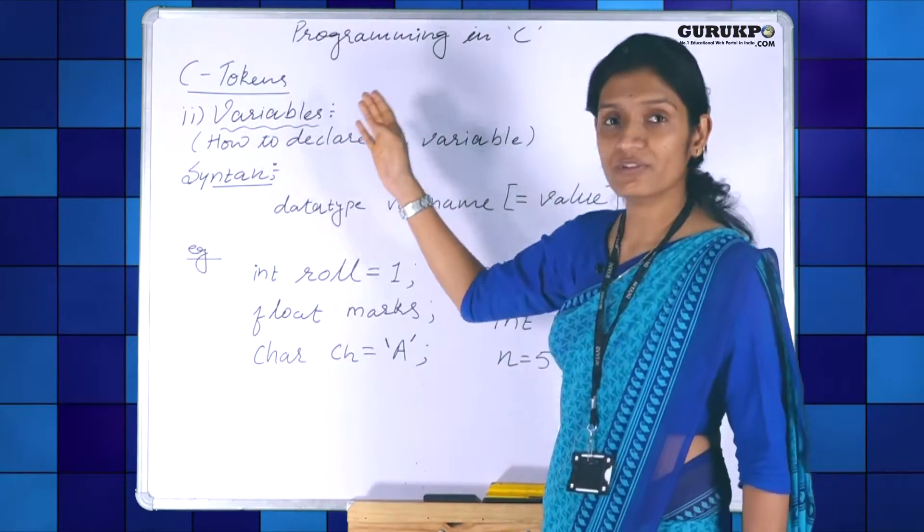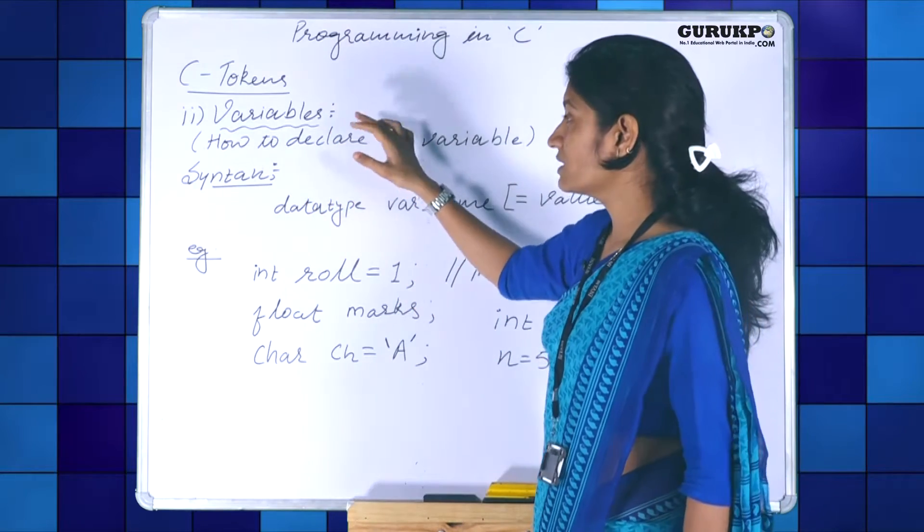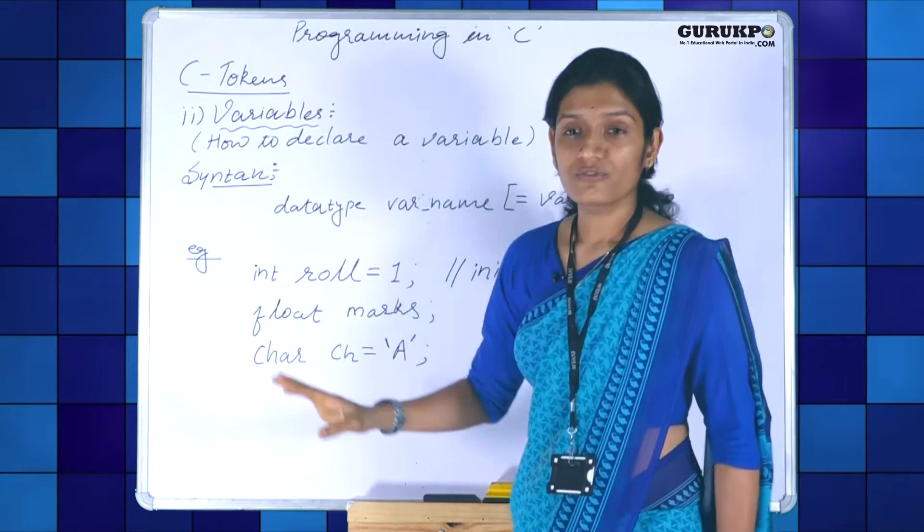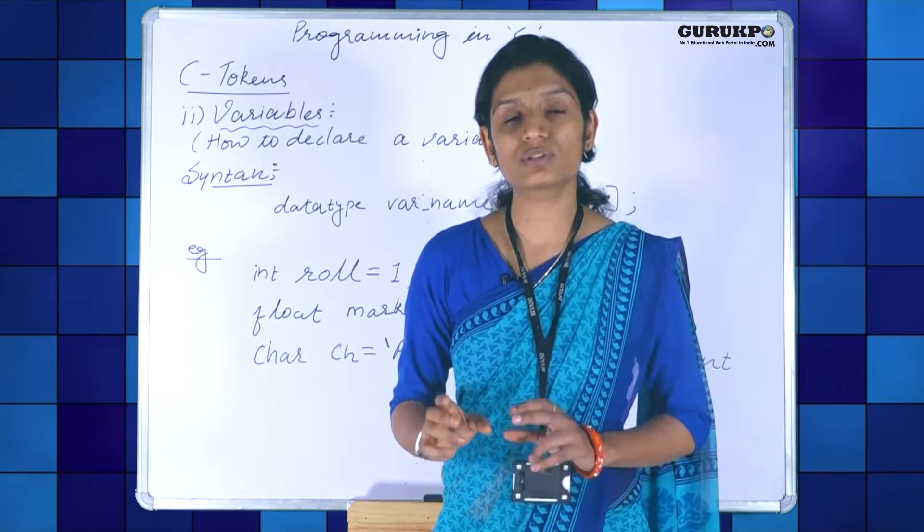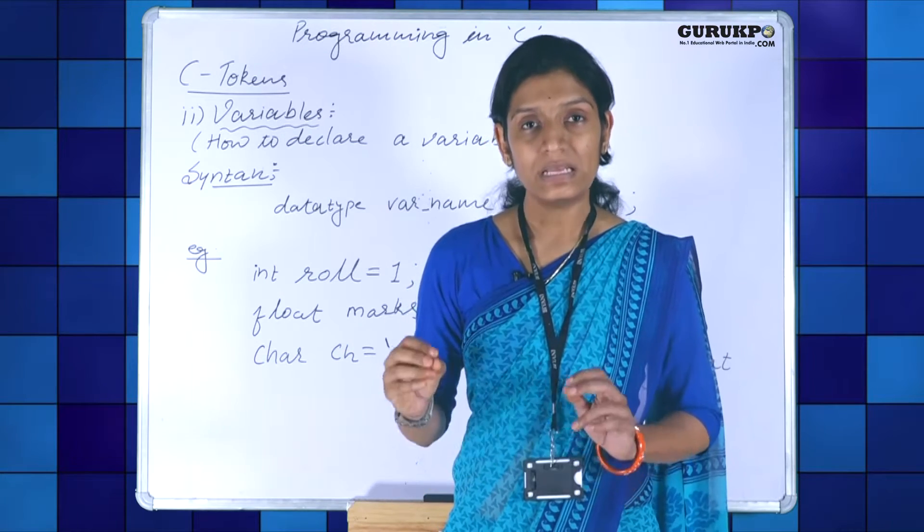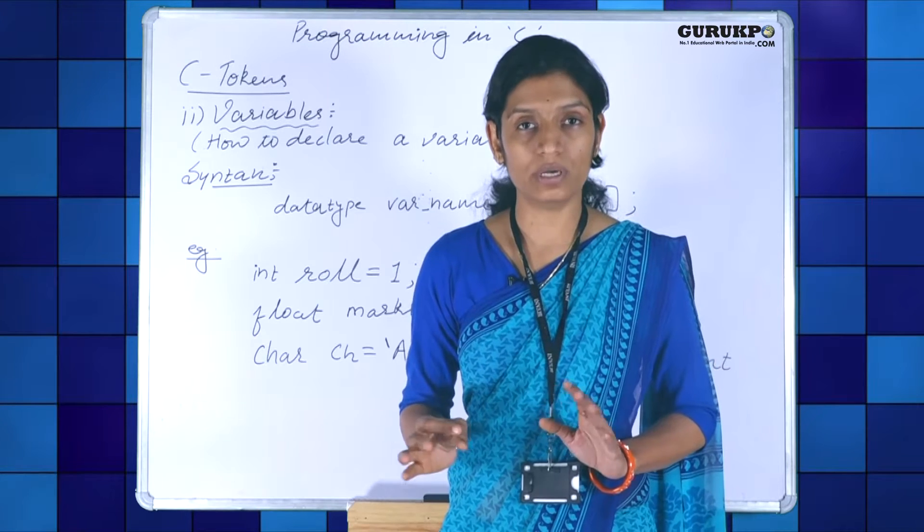In the last lecture we discussed C tokens and we are continuing it. The next one is variables. First thing is what are variables? Variables are the basic unit for storage in C. Anything that we want to store we need to take a variable to hold it.